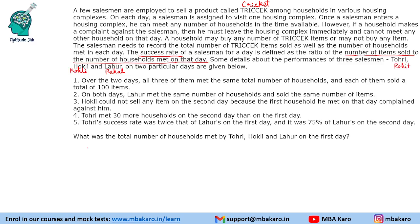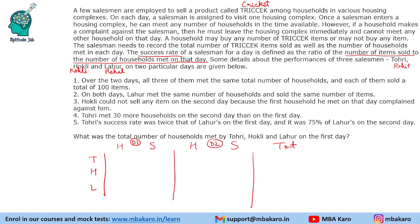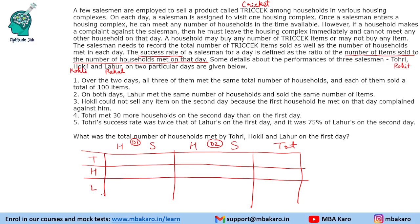We will be solving for these three people: Tohuri, Hockley, and Lahur. We need to find the number of households they met and the items they sold over two days. The success ratio is sale divided by the number of households met. We set up a table for household and sale across Day 1 and Day 2, plus totals. Over the two days, all three met the same total number of households, and each of them sold a total of 100 items.